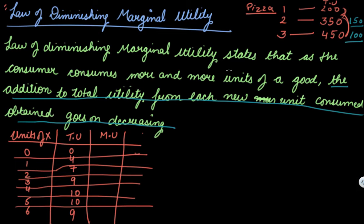A human being is very rational. As a consumer, how many pizzas can you eat? Can you eat 10 pizzas at a time? No. There is a saturation point. The first pizza — you are very hungry, it will taste good and give you more satisfaction. The second pizza will again fill your stomach, but the satisfaction obtained will be a bit lower than from the first unit consumed. This is where the law of diminishing marginal utility holds.